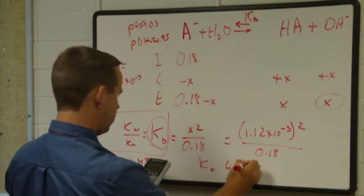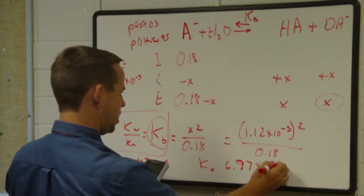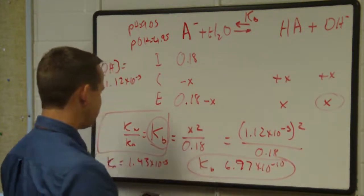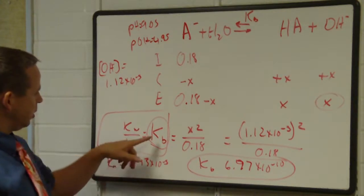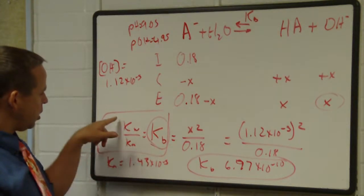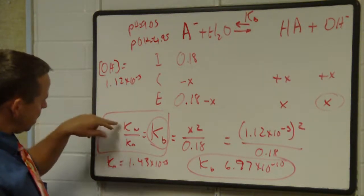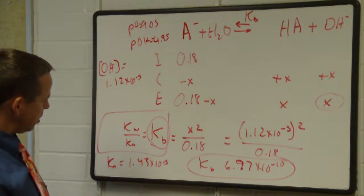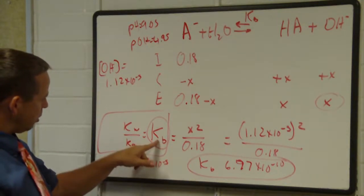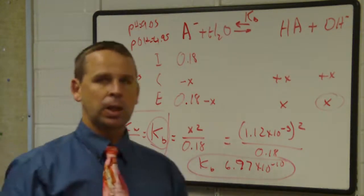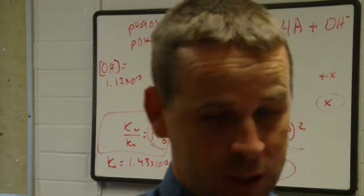6.97 times 10 to the minus 10, that's the Kb. So I got the Kb, I got the Ka. I knew the Kw and I could identify the Ka. Kw over Ka equals the Kb. So if I have the Kb I can put the Kw over the Kb and find the Ka. That's how that one was done.